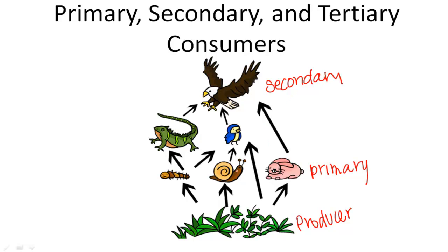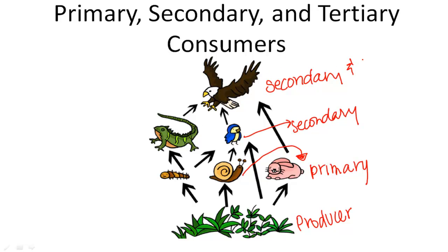Now over here there's a snail. This snail is also a primary consumer, and this bird is a secondary consumer. The hawk eats the secondary consumer, making it both a secondary and a tertiary consumer.